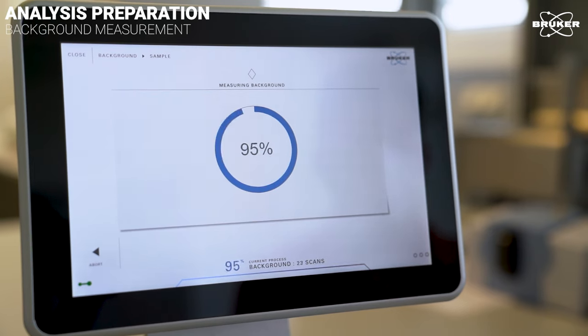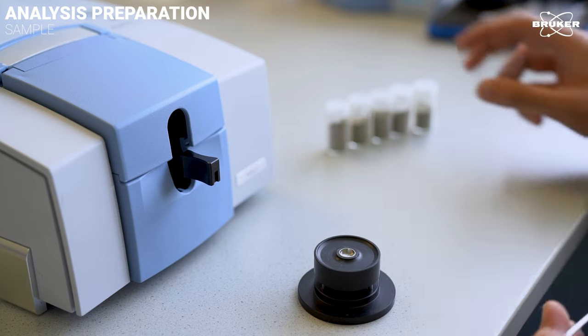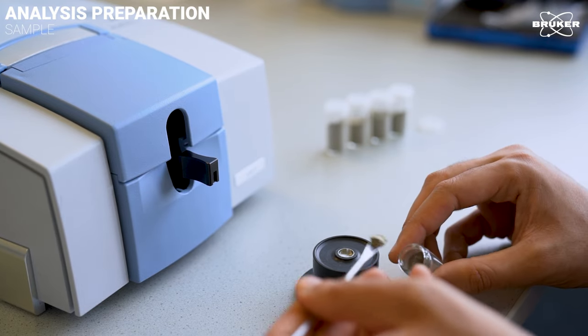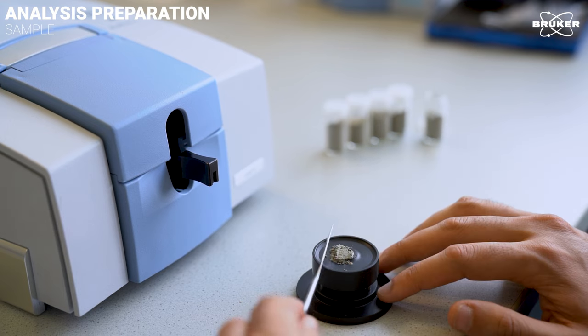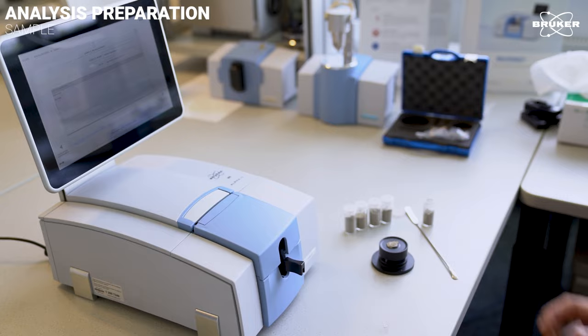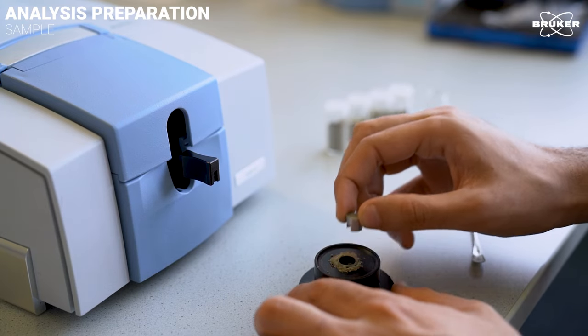The background has finished and we can prepare the cement sample with the help of a sample guide and a spatula. The sample is carefully distributed within the sample cup without using pressure. The sample guide is then rotated downwards and the sample cup removed to be placed on the DRIFTS module.